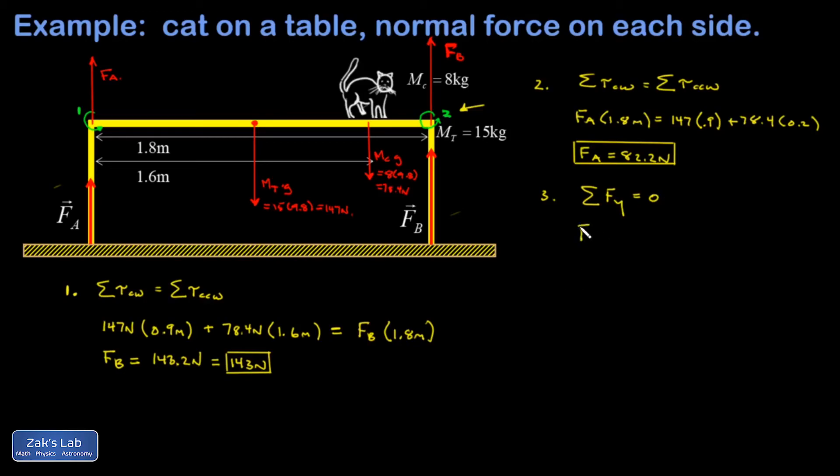That means all the upward forces on the table must be equal to all the downward forces on the table. And that means F_A plus F_B better be equal to the force of gravity downward on the table plus the force of gravity downward on the cat. We could have used that equation to find F_A after we had already found F_B. I just decided to go for a more symmetric approach. So now we're just checking that each side of this equation turns out the same. So I have on the left 143 plus 82.2 for the two forces.